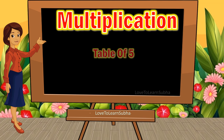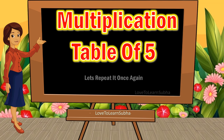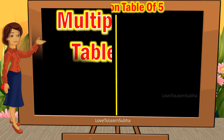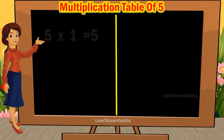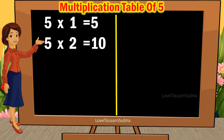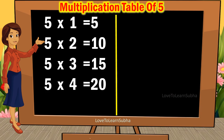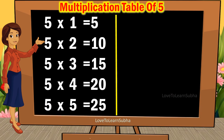Now, let's repeat it once again. 5 1s are 5. 5 2s are 10. 5 3s are 15. 5 4s are 20. 5 5s are 25.